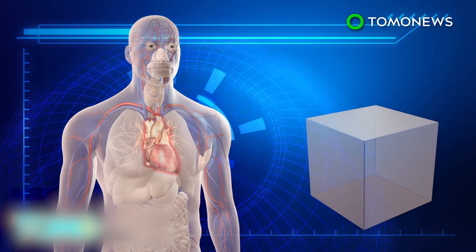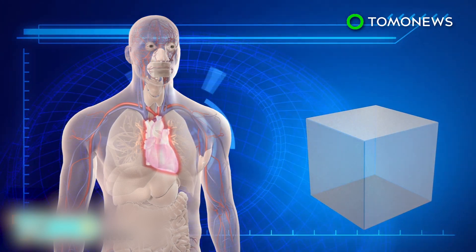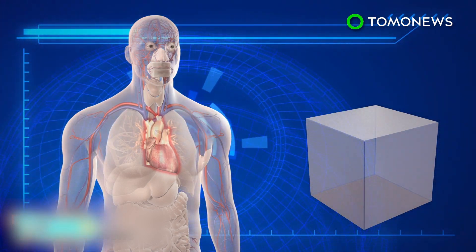The heart on a chip is composed of a small piece of flexible polymer that contains living human heart cells, which can mimic the physiological response of a human heart.